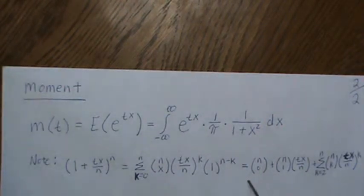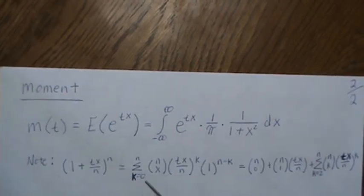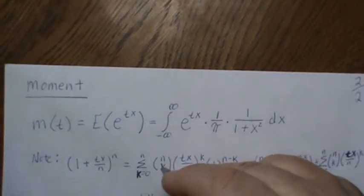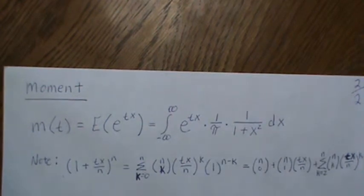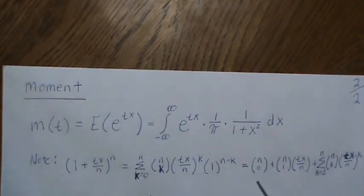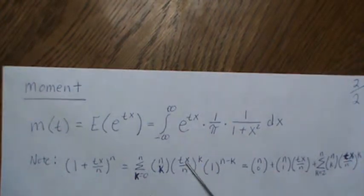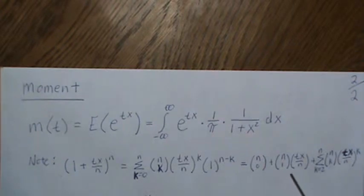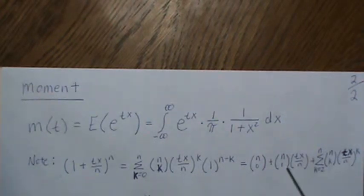When k=0 we have (n choose 0) times (tx/n)^0 which is 1. When k=1 we have (n choose 1) times (tx/n)^1. Then the sum from k=2 to n we keep here. If we note that t is positive and x is positive, all these terms are positive.